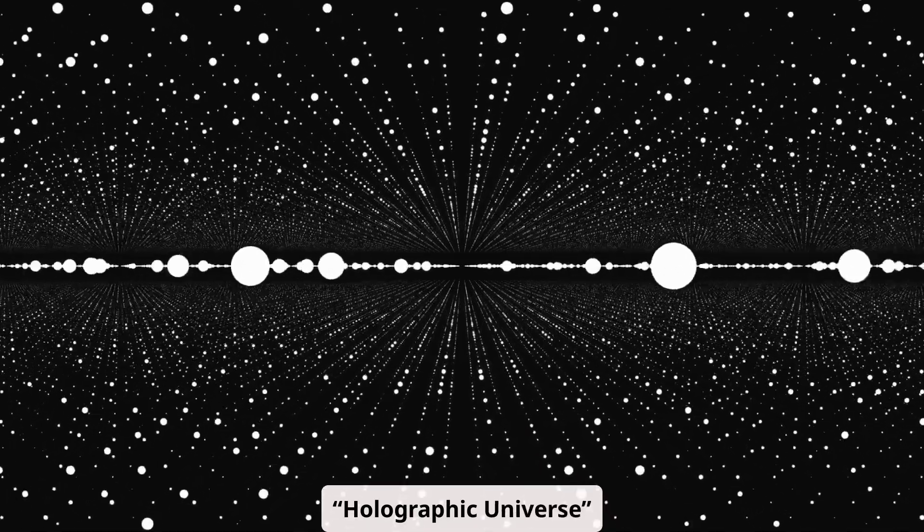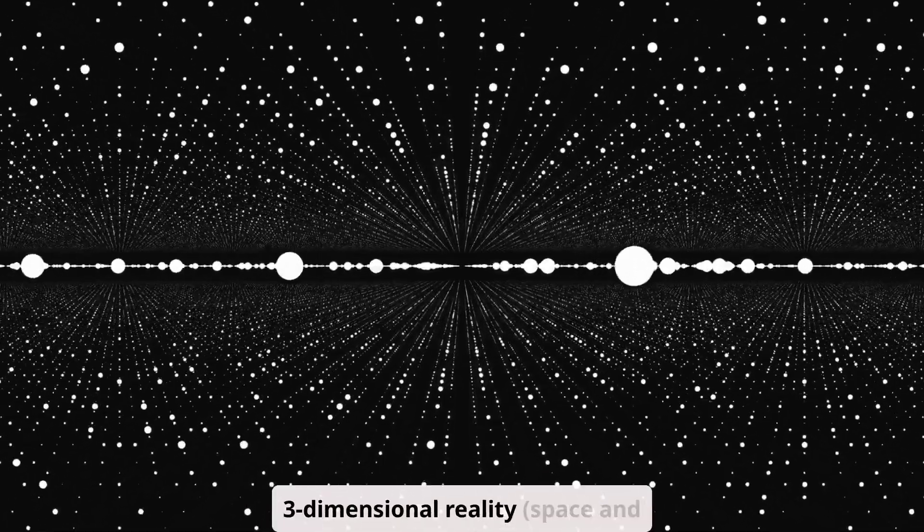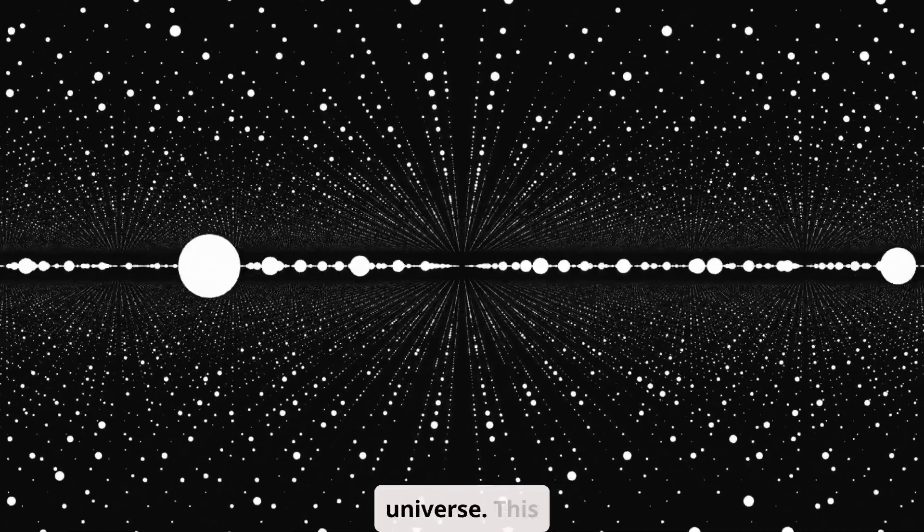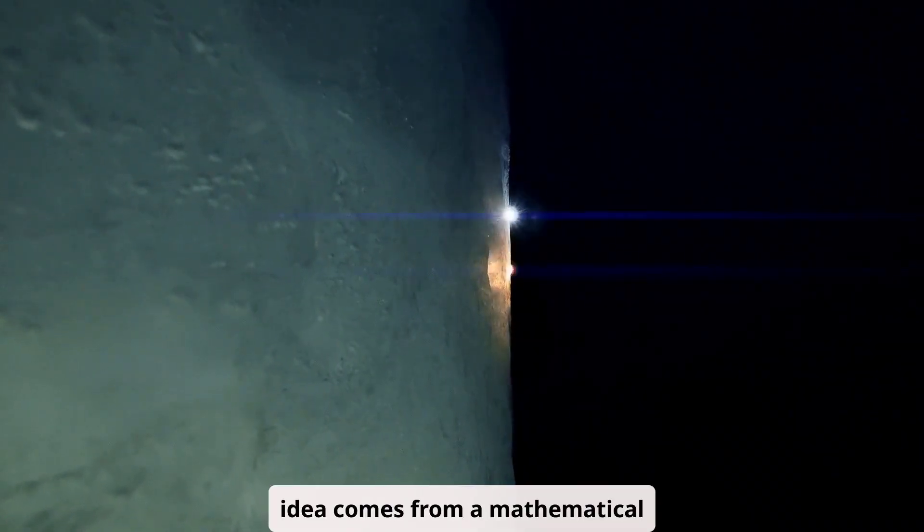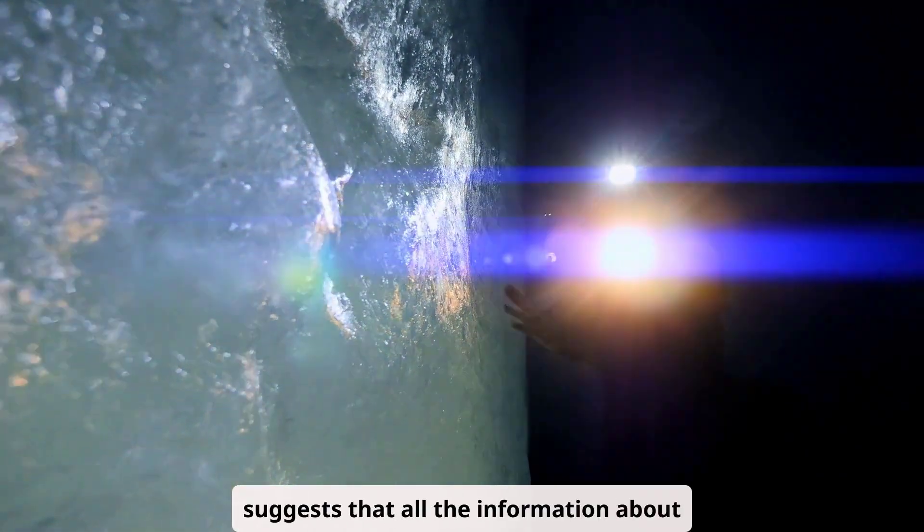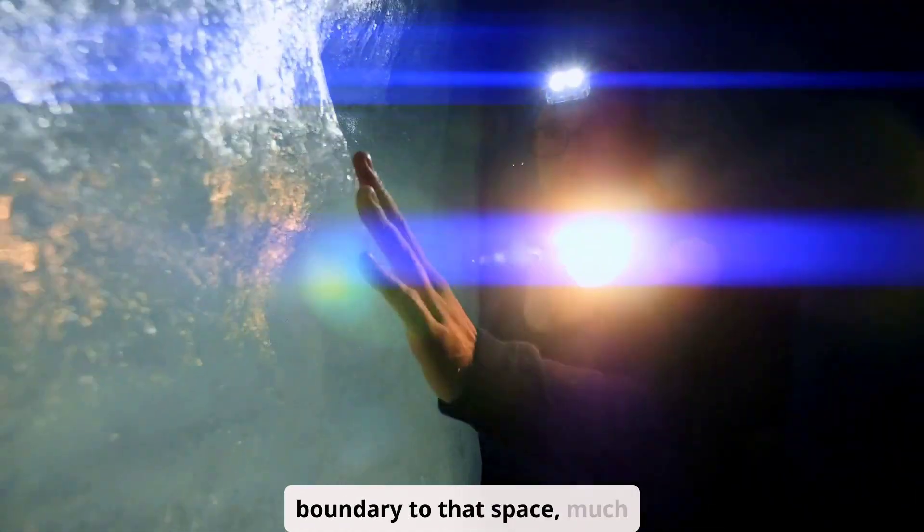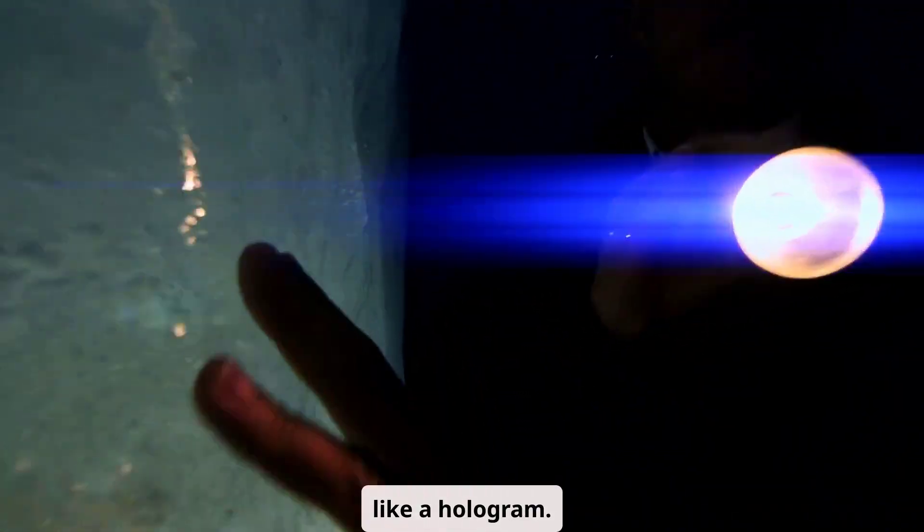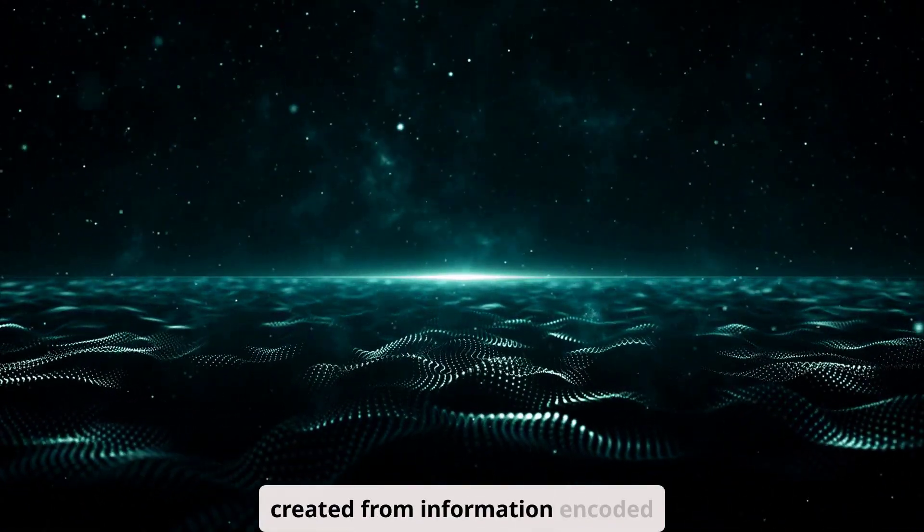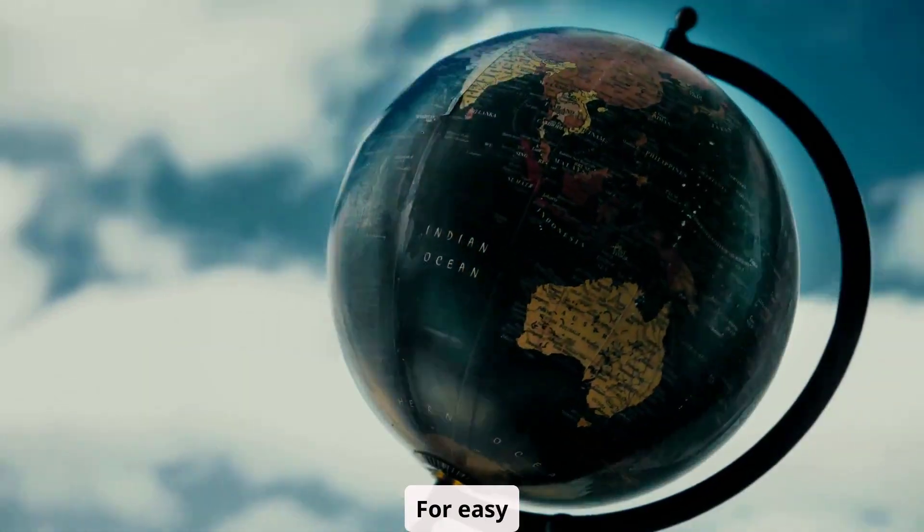The Holographic Universe Theory. According to this theory, our entire three-dimensional reality, space and time, could be a 2D projection from the edge of the universe. This idea comes from a mathematical concept called the Holographic Principle, which suggests that all the information about a volume of space can be encoded on a lower dimensional boundary to that space, much like a hologram. This means that, in a way, everything we experience may just be an illusion created from information encoded on a distant cosmic surface.